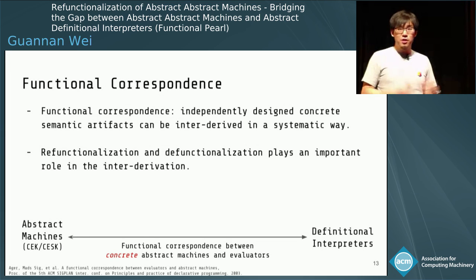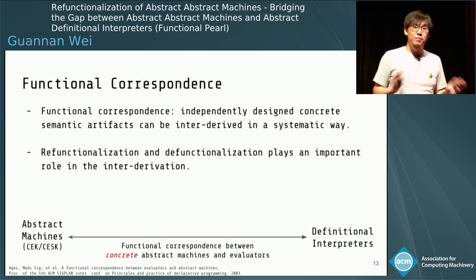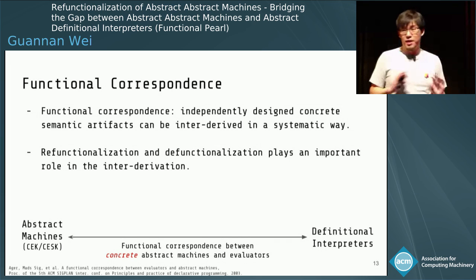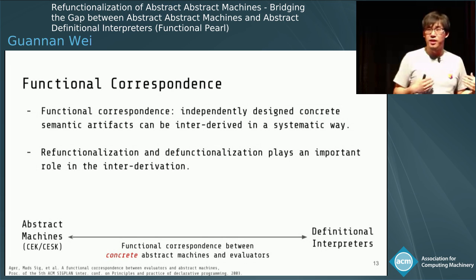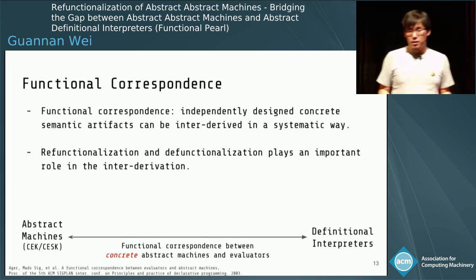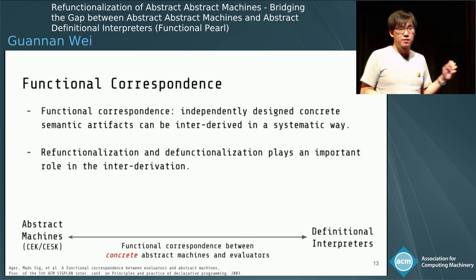We can also transform back to direct style from the CPS interpreter and obtain a direct style definitional interpreter. This functional correspondence shows a systematic way to inter-derive many independently designed concrete semantic artifacts. They look different, but they can be connected, and refunctionalization and defunctionalization play a very important role in this inter-derivation.